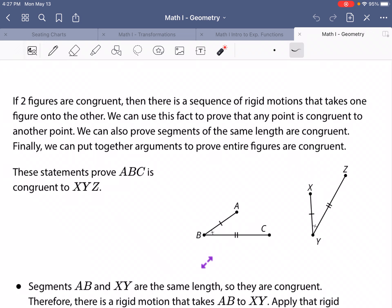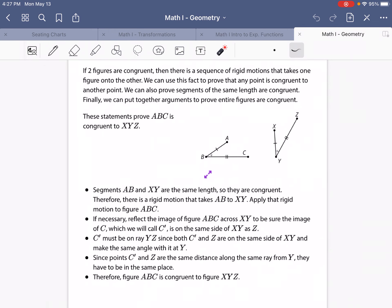Finally, we can put together those ideas and build an argument to prove that entire figures are congruent to one another. So these statements down below prove that ABC is congruent to XYZ. Let's take a look at what it says.